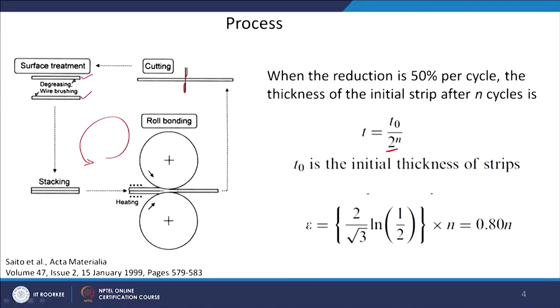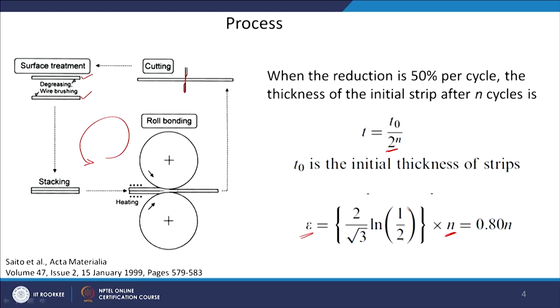Assuming 50 percent reduction each cycle, the thickness will be dependent on the number of cycles, where T-naught is the initial thickness. There is also a relationship for the strain in the material which depends on the number of cycles, again assuming 50 percent reduction every time. If it is not so, you have to change the value accordingly. Ultimately, doing the mathematics, you get an expression: epsilon equals the number of cycles multiplied by 0.8. If you are putting 60 percent reduction instead, you have to change the relationship accordingly.